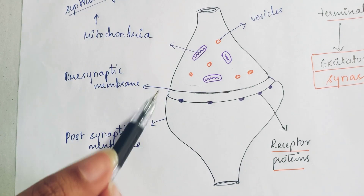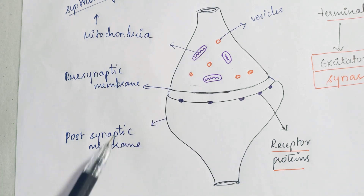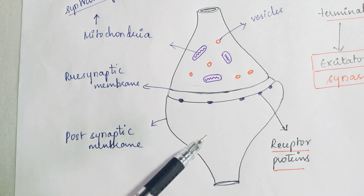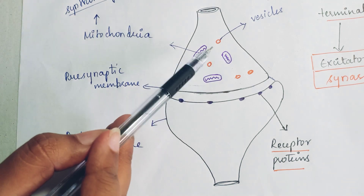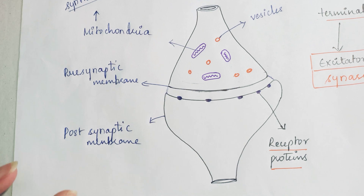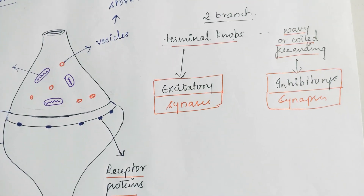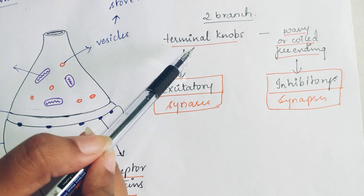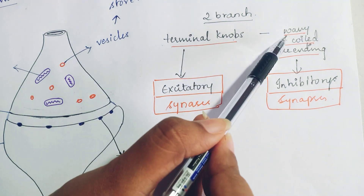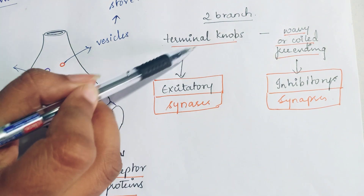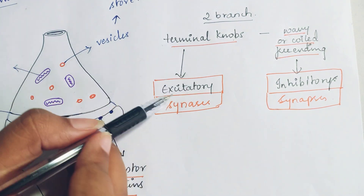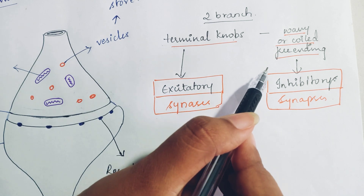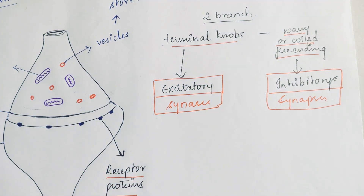This is the structure of the chemical synapse. There is a presynaptic neuron with its presynaptic membrane and the post-synaptic membrane of the post-synaptic neuron. You can see vesicles and mitochondria in the presynaptic terminal. The presynaptic neuron ends in two types of branches: those ending in knob-like structures called terminal knobs, which are responsible for excitatory function, and those with wavy or coil-free endings, which are responsible for inhibitory function.